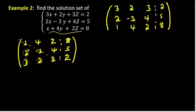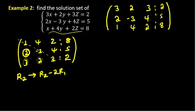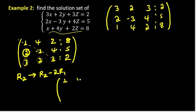We have 0. We have to write the formula. Rho 2. This is Rho 2. Rho 2 minus 2 times Rho 1. 2 times Rho 1 is 1. The formula gives 1, 4, 2, 8. The formula is one.